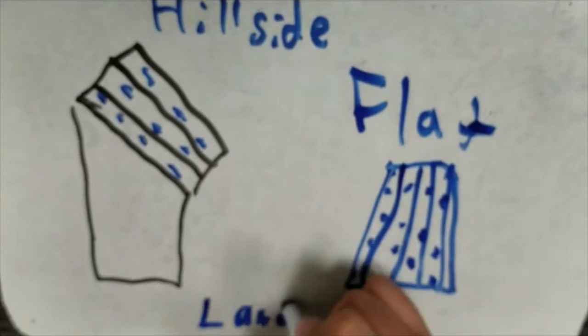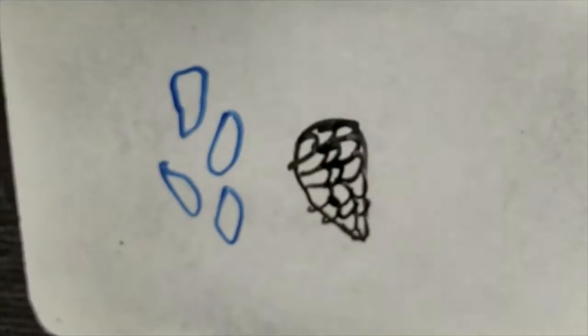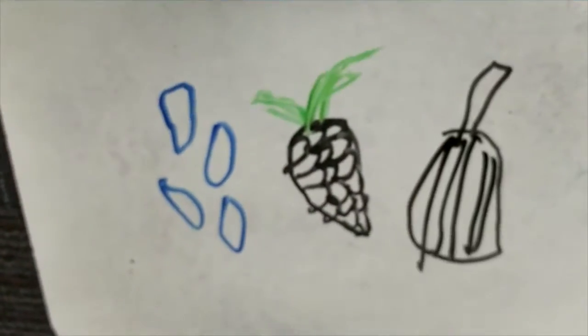Step farming is a system of cutting flat areas into sides of hills and mountains. Mayans ate foods based around corn, beans, squash and turkey.